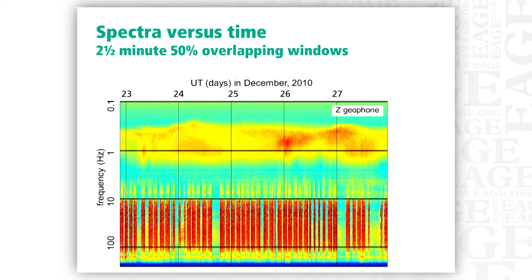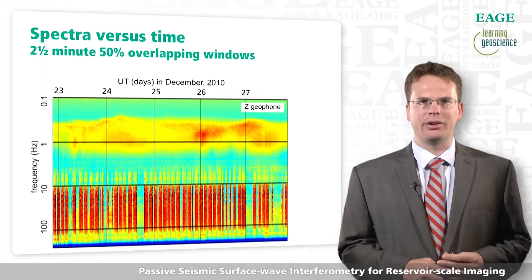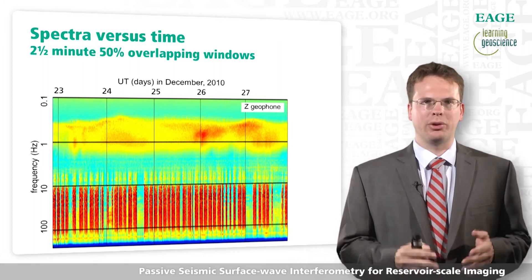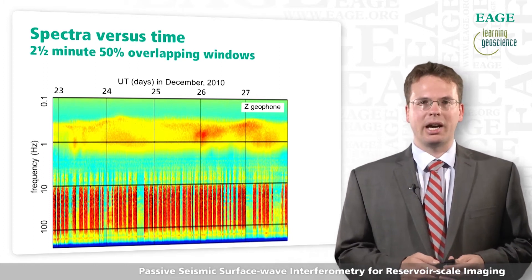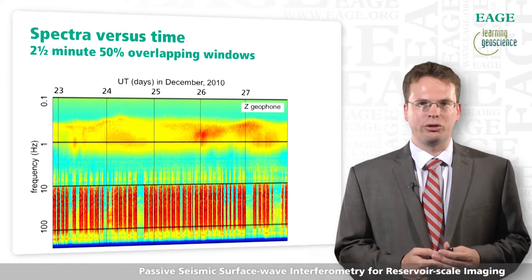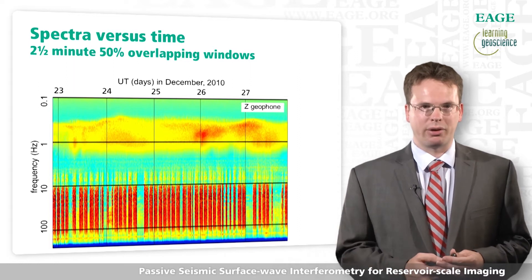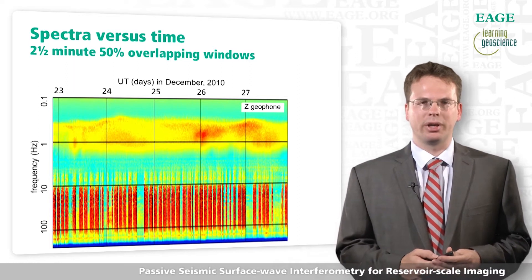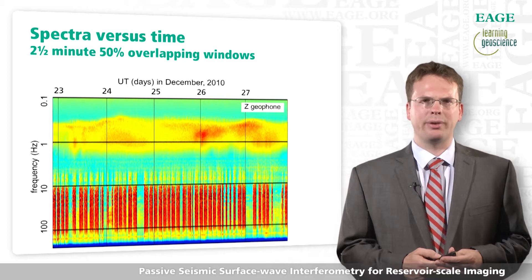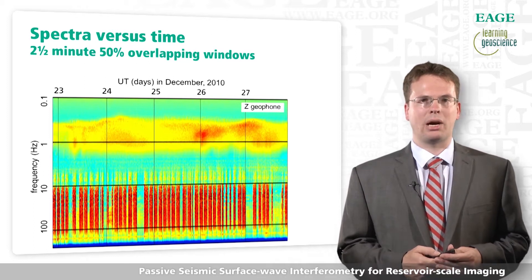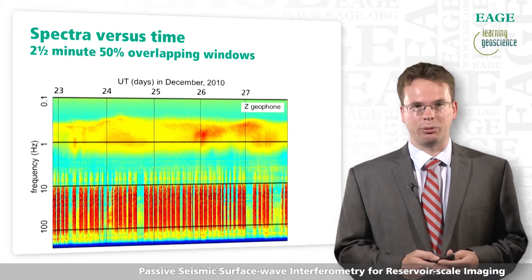What does the spectrum of the ambient field look like studied versus time? Here you can see the spectrum of the ambient seismic field as it changes over 5 days. At higher frequencies you can see shot energy probably emitted somewhere in the neighborhood of Ekofisk. At lower frequencies there is a lot of energy that is very strong and continuously present, though it does change over time. We call that energy microseismic noise.